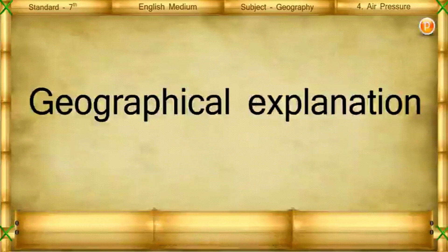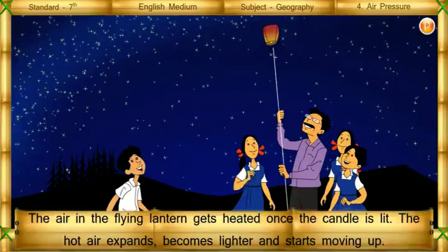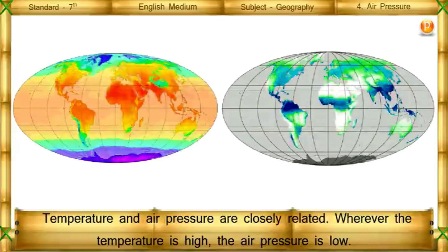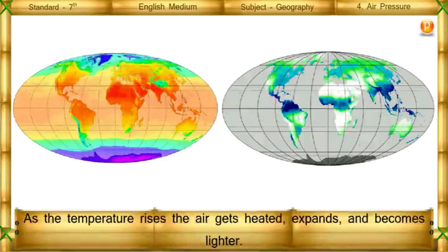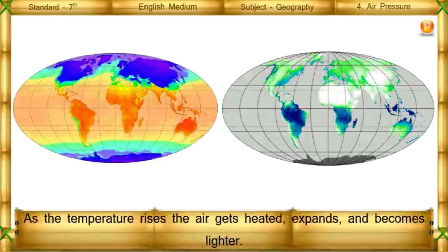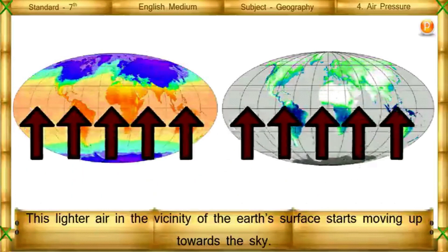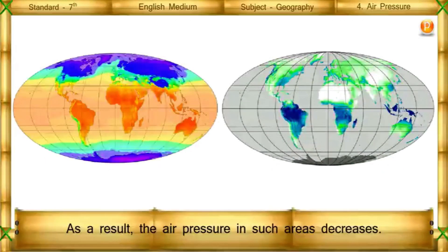Geographical explanation: The air in the flying lantern gets heated once the candle is lit. The hot air expands, becomes lighter, and starts moving up. Therefore, the lantern is also lifted up towards the sky. In nature too, a similar phenomenon occurs. Temperature and air pressure are closely related. Whenever the temperature is high, the air pressure is low. As the temperature rises, the air gets heated, expands, and becomes lighter. This lighter air near the Earth's surface starts moving upwards, and as a result, air pressure in such areas decreases.